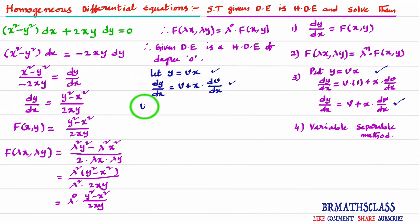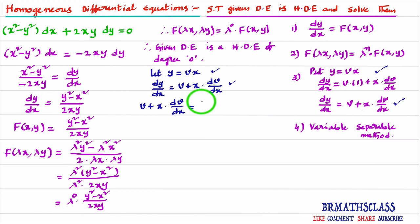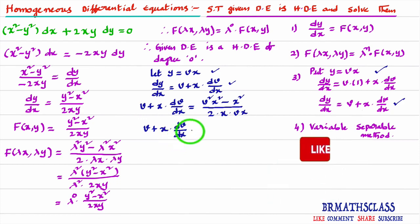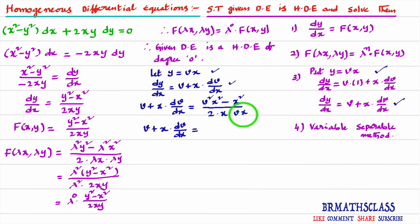Substituting: v + x · dv/dx = (v²x² − x²) / (2x · vx). In the numerator, x² is common; in the denominator, x · x = x². The x² cancels, giving v + x · dv/dx = (v² − 1) / (2v). Taking the v term to the right-hand side: x · dv/dx = (v² − 1)/(2v) − v = (v² − 1 − 2v²) / (2v) = (−1 − v²) / (2v).